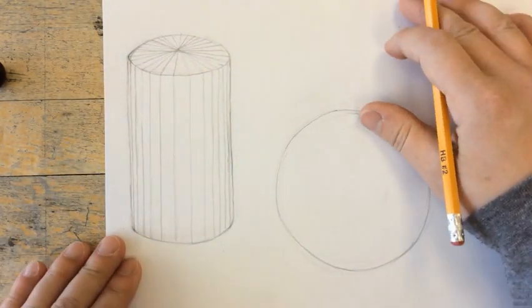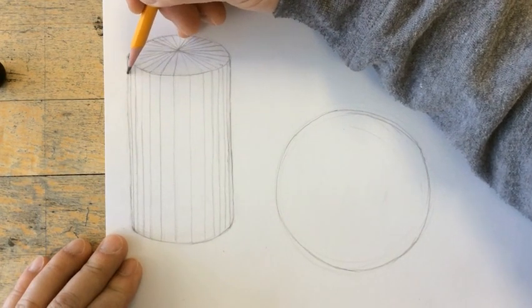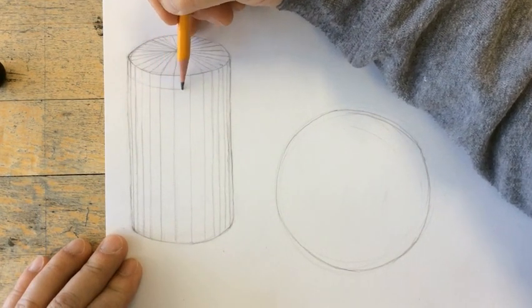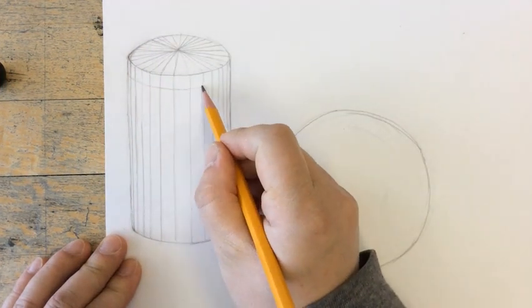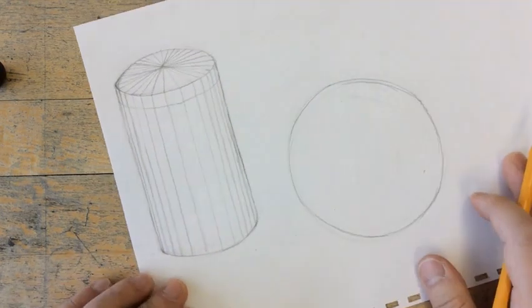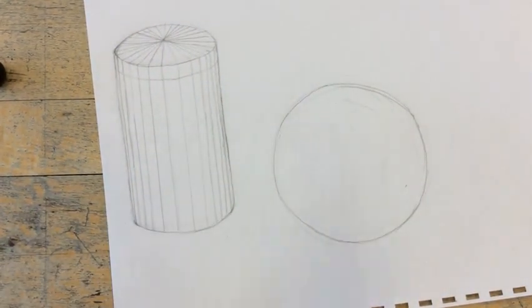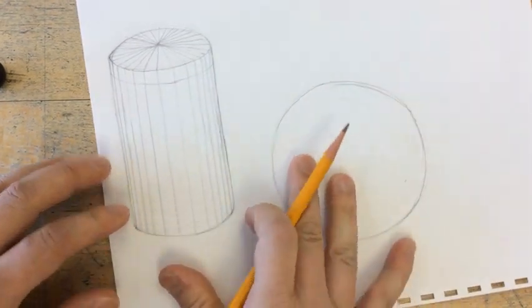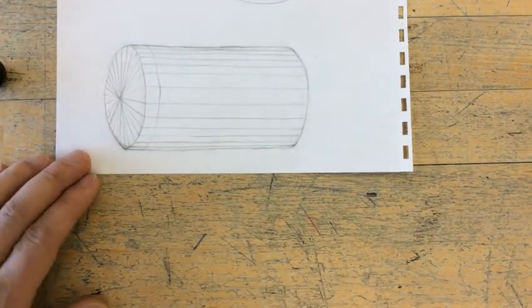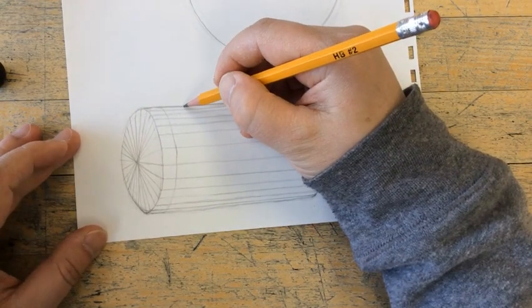So now that I'm done with my vertical lines, I'm going to draw the cross contour lines that wrap around the side. Most important thing you want to keep in mind when you're doing this is that these horizontal lines should have a curvature that is parallel or reflective of the top cylinder at the top.